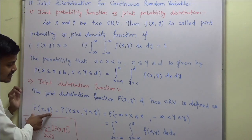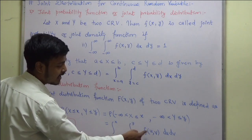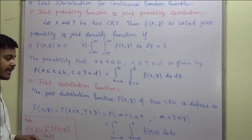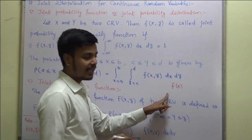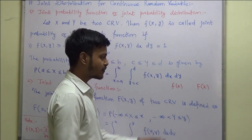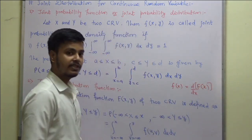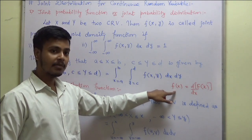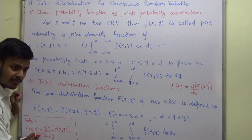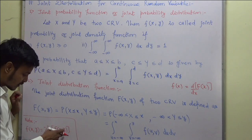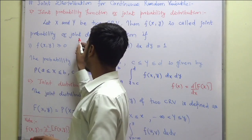The joint distribution function is denoted by capital F(x, y) and is defined as integration from u equals minus infinity to x, and v from minus infinity to y, of f(u, v) du dv. We know the relation between the probability density function and the distribution function: for a single variable, f(x) is d/dx of the distribution function. For two random variables, you get the joint density function by differentiating the distribution function with respect to both x and y.